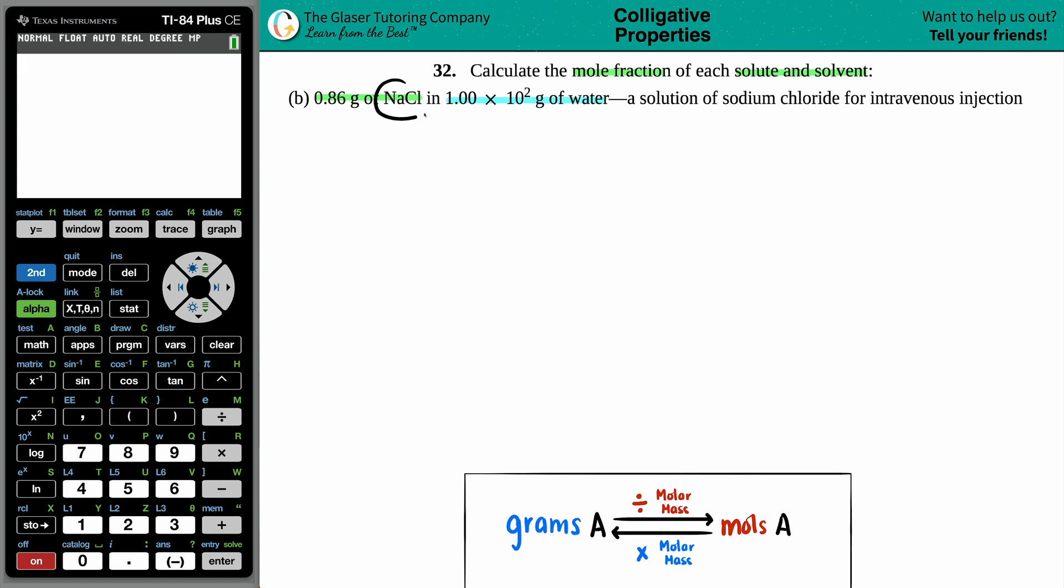Since we have sodium chloride, table salt, that is being placed in water, can you envision taking an amount of salt and putting it into water? Salt water would be the total solution, but the NaCl would be the solute, and the water, the liquid media, is going to be the solvent.